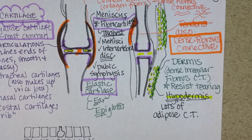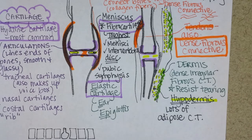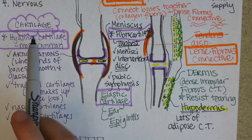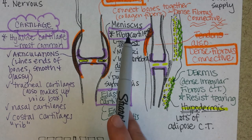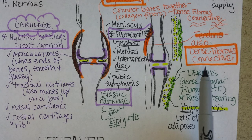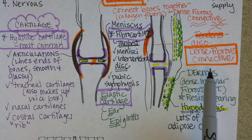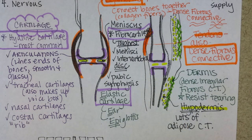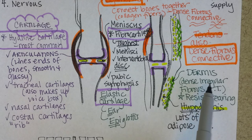Let's see if you can recall all the types of connective tissue we've gone through. First, cartilage — and there are three types: hyaline, fibrocartilage, and elastic. Then dense fibrous connective tissue, with two kinds: dense regular fibrous, found in ligaments and tendons, and dense irregular fibrous, found in the dermis of the skin. And then adipose connective tissue.